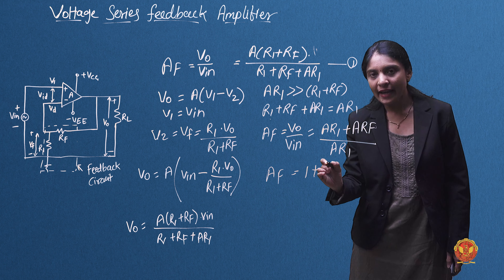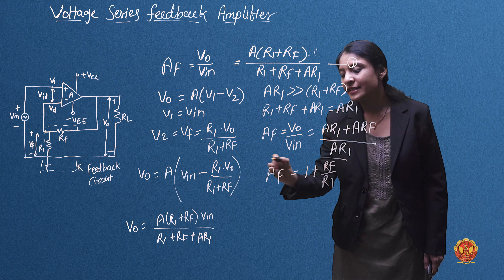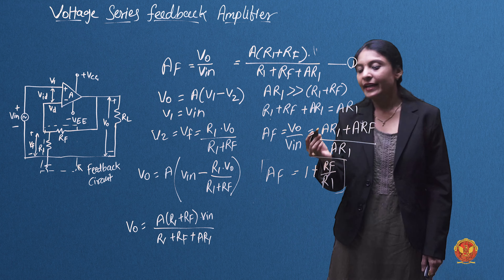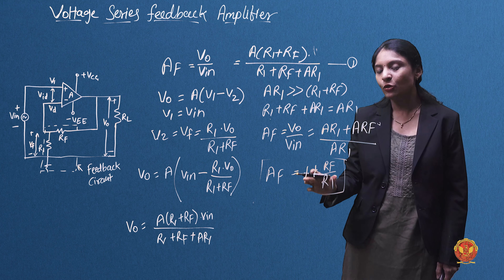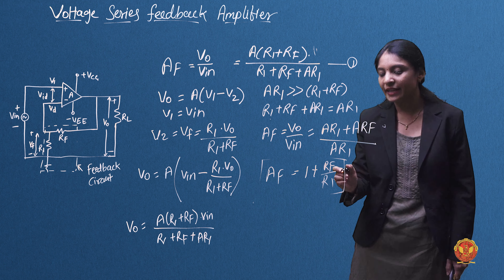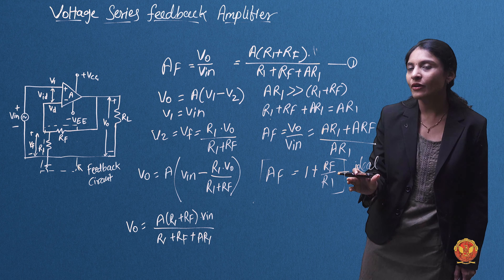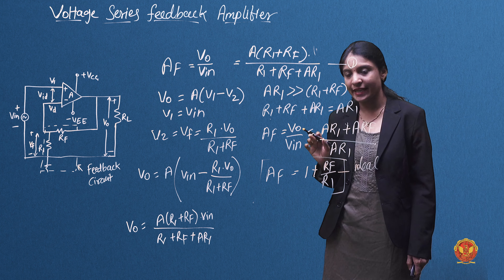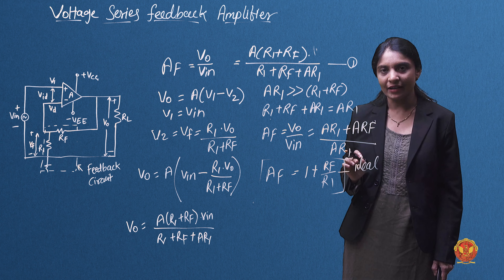इस equation को हम 1 plus Rf divided by R1 की तरह simplify करेंगे। यह simplified equation है जो ideal equation है for the closed-loop voltage gain, that is AF = 1 plus Rf by R1.